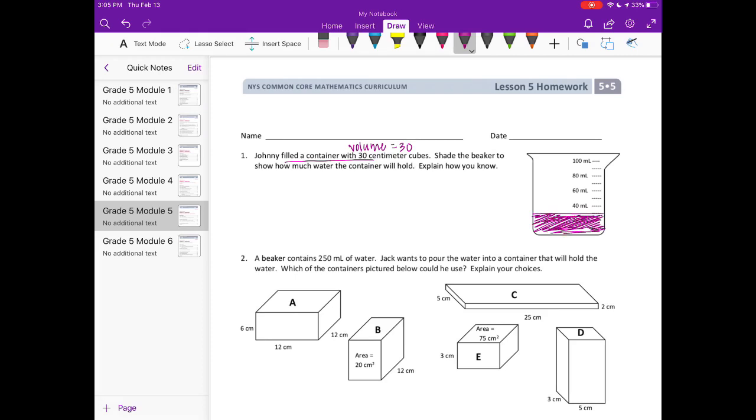So that would be how much water the container could hold. Explain how we know. Well, we could say that filling the container means the volume is 30 centimeters cubed. Or you could also say something about it being centimeters cubed, and cubes are used to fill something up and show volume. So that's why we shade it to that point.